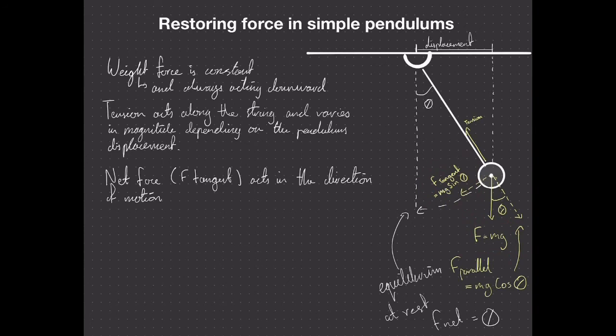So, why, when our simple pendulum bob is at rest at equilibrium, does our f net equal zero?